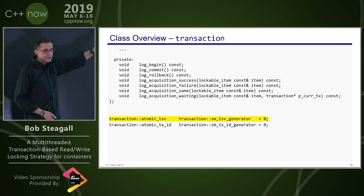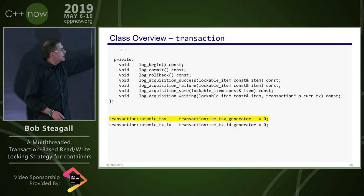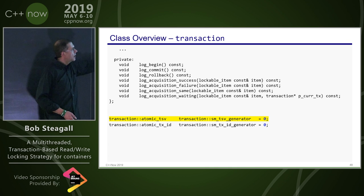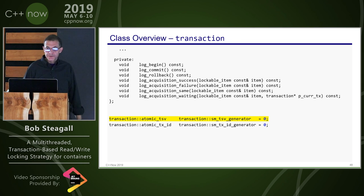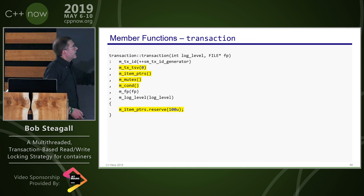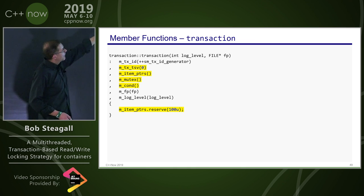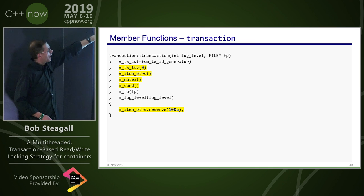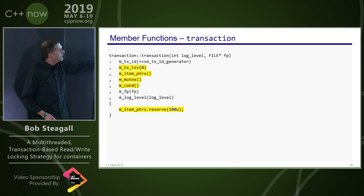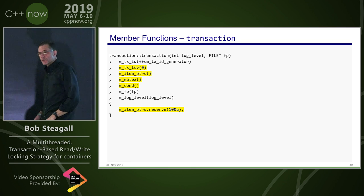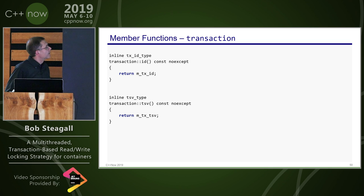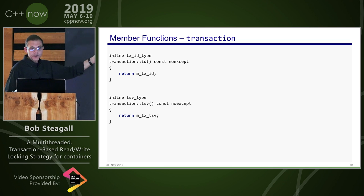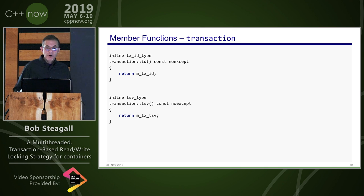The static data member is defined in a source file with an initial value of zero — also invalid. In the transaction constructor, the timestamp value is set to zero, everything is default-constructed, and the item pointer vector reserves space for up to 100 items upfront to avoid allocations at runtime.